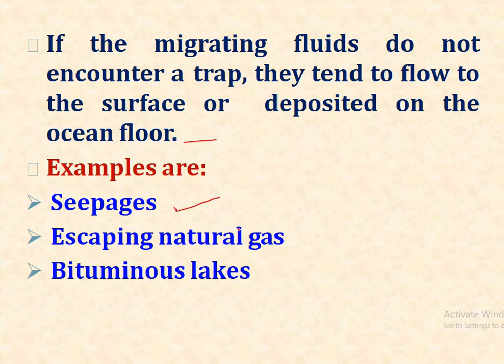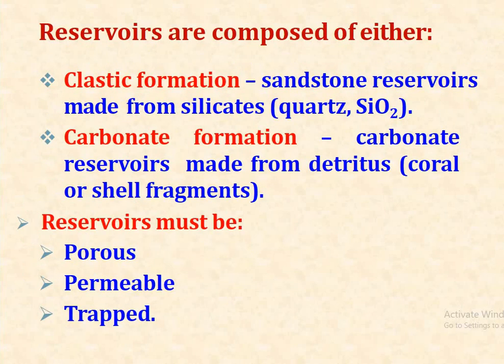Examples of surface escape include seepage, escaping natural gas, and oil seeps. Reservoirs are composed of either clastic formations — sandstone reservoirs made up of silica — or carbonate formations, such as carbonate reservoirs made up of detritus or coral shell fragments. Reservoirs must be porous, permeable, and trapped.